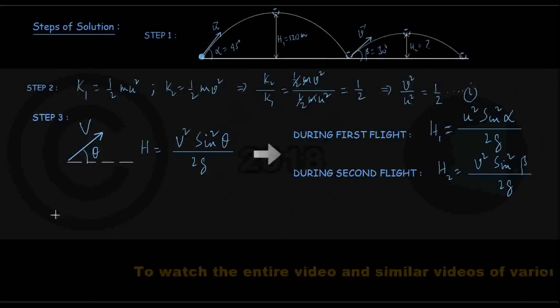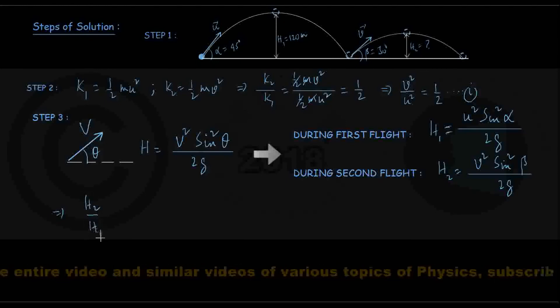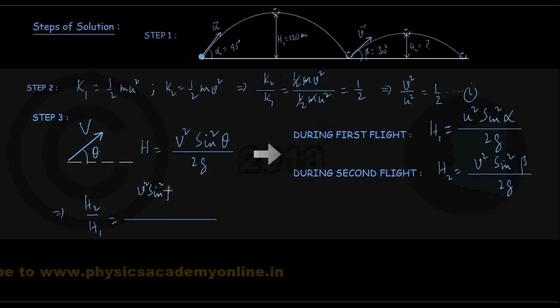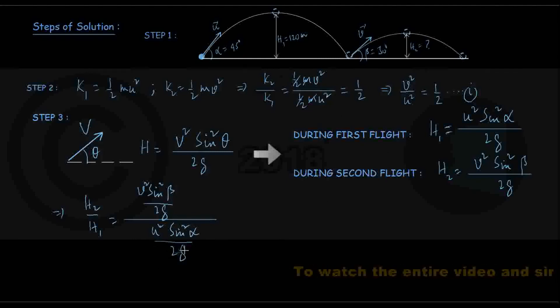Therefore, we can write down that the ratio h2 by h1, that is coming out to be v squared sin squared beta divided by 2g upon u squared sin squared alpha divided by 2g. These 2g is cancelling out.